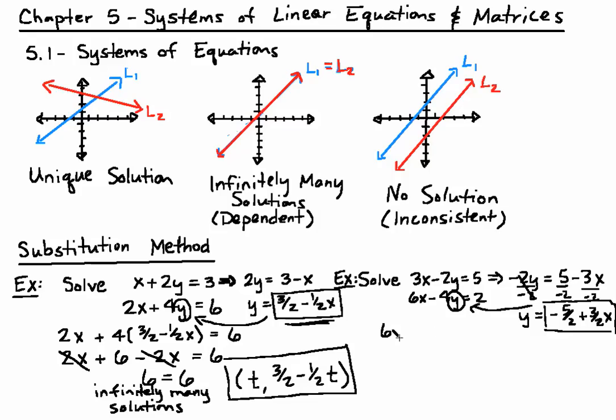So 6x minus 4 times negative 5 halves plus 3 halves x equals 2. And after we distribute and combine like terms, 6x minus 6x again cancels. And this time we are left with 10 equals 2.